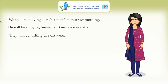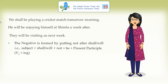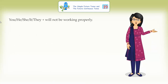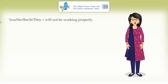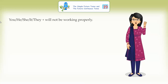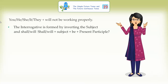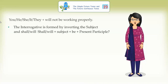The negative is formed by putting not after shall/will: subject plus shall/will plus not plus be plus present participle. Examples: I shall not be sleeping then. We shall not be playing the match. You, he, she, it, they will not be working properly. The interrogative is formed by inverting the subject and shall/will: shall/will plus subject plus be plus present participle. The negative interrogative is formed by adding not before be: shall/will plus subject plus not be plus present participle.